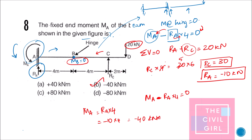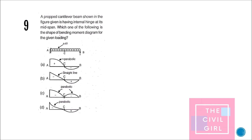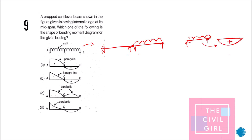Next question: a propped cantilever with an internal hinge at mid-span — what is the shape of the bending moment diagram? The hinge acts like two supports. The right part behaves as a simply supported beam under UDL, producing a hogging (positive) bending moment — so anything with negative bending moment on that side can be eliminated (options A and C out). The left part also has UDL, so the BMD must be a curve, not a straight line — eliminate option B. The answer is option D.